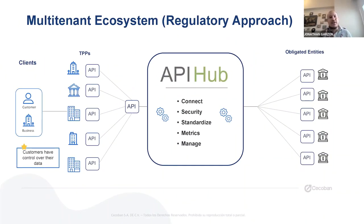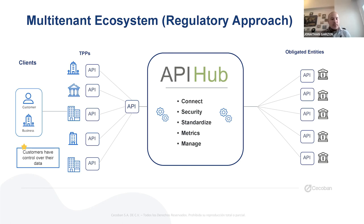Then we have the multi-tenant ecosystem with a regulatory approach. In this model, multiple entities and TPPs can operate in a shared environment using a central point that can verify, authenticate, translate and switch transactions from the third-party provider to the obligated entities, allowing all players to operate with greater confidence and security. Having only one API gateway where all can connect means the effort and resources to implement and make future upgrades — whether for regulatory or technical changes — is significantly lower than the previous scenario.